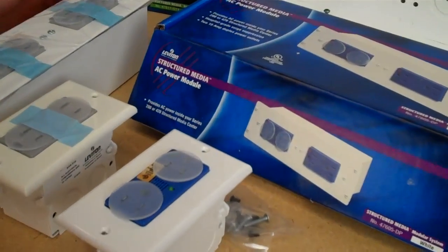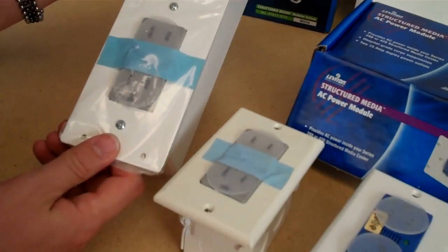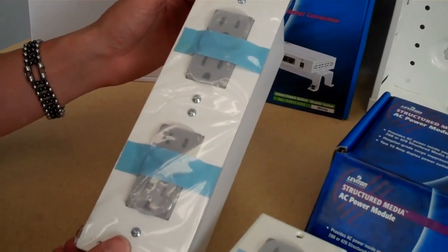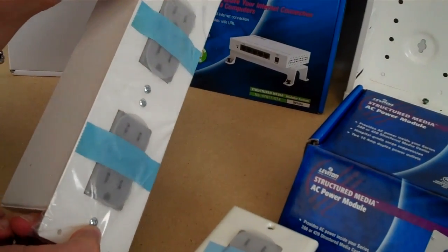So today we are going to look at some of the power supply modules that mount inside of a structure wiring panel. Here we have a four outlet double gang outlet that mounts in the bottom of the structure wiring panel.